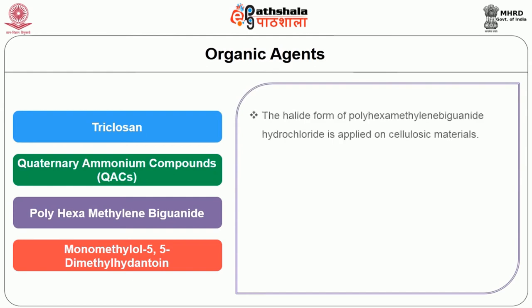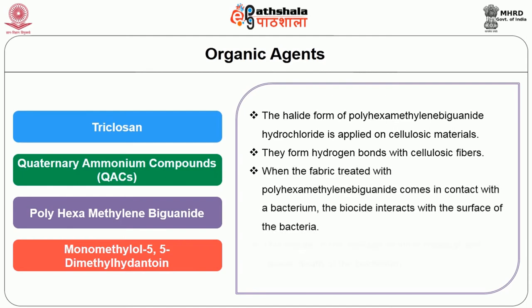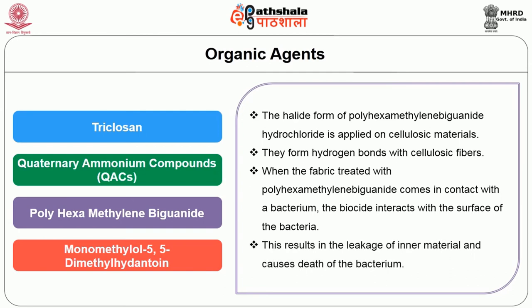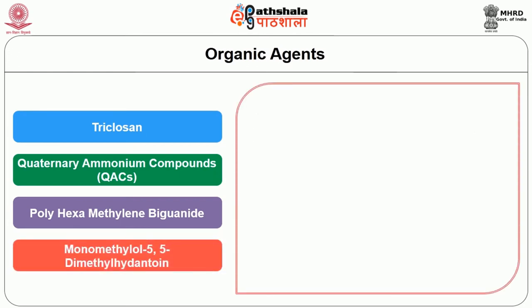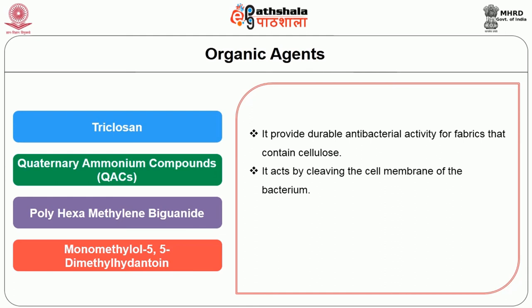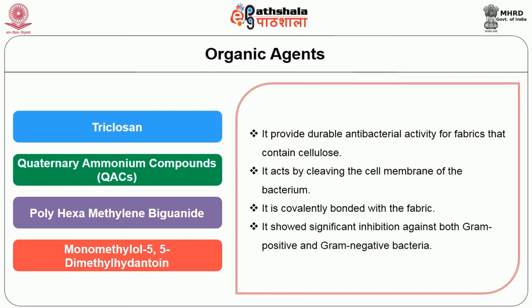Polyhexamethylene biguanide — the hydrochloride form — is applied on cellulosic materials. They form hydrogen bonds with cellulosic fibers. When fabric treated with polyhexamethylene biguanide comes in contact with bacteria, the biocide interacts with the surface of the bacteria, resulting in leakage of inner material and cell death. Monomethylol 5,5-dimethylhydantoin provides durable antibacterial activity for cellulose-containing fabrics. It acts by cleaving the cell membrane of the bacterium. It is covalently bonded with the fabric and shows significant inhibition against both gram-positive and gram-negative bacteria.